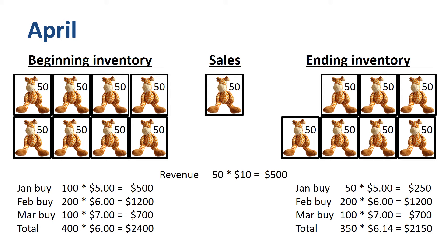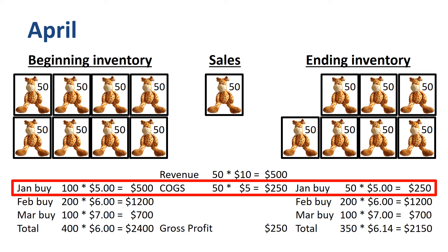If we prepare the income statement for April, revenue is 50 units times $10 is $500. Cost of goods sold, or COGS, is 50 units times $5 is $250, and gross profit is $250. Out of the January buy that was part of the beginning inventory, 50 units go to COGS, and 50 units go to the ending inventory.